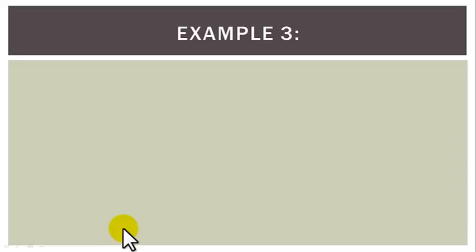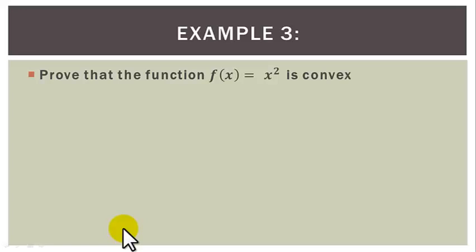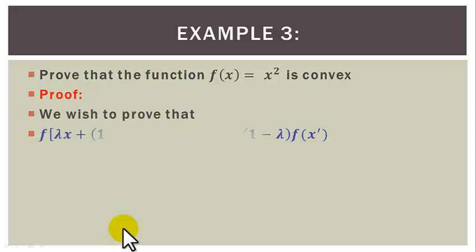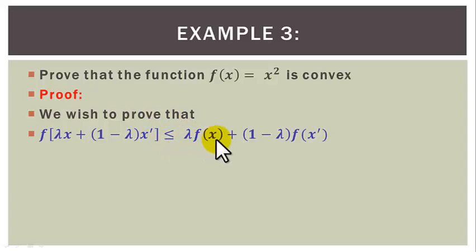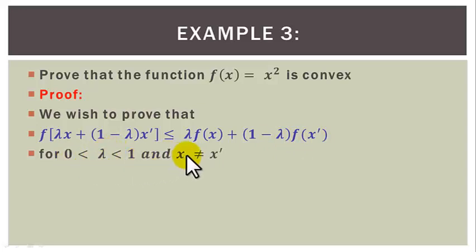Example 3. Prove that the function f(x) equals x squared is convex. We saw using diagrams that this function is convex; let us now prove it algebraically. Proof: We wish to prove that f(lambda x + (1 minus lambda) x') is less than or equal to lambda f(x) plus (1 minus lambda) f(x'), for lambda between 0 and 1 and x not equal to x'. Given two distinct points x and x' in the domain, we must show this inequality holds.